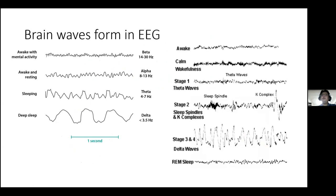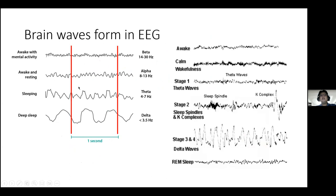Since the era of Hans Berger, we know there are a lot of brain waves, seen in different states: the awake state, drowsy state, and sleeping. We classify waves based on frequency — you take a one-second period and count how many waves appear. For instance, in deep sleep if you see two deflections in one second, that's 2 Hz. Anything less than 3.5 Hz is considered delta.